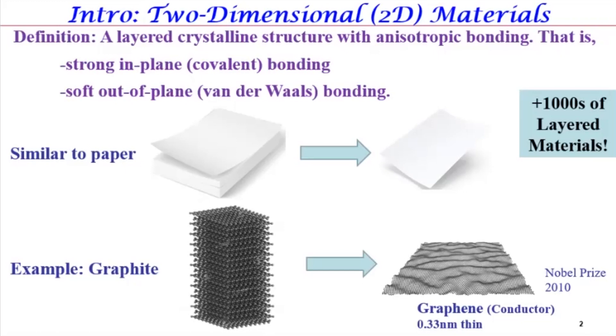The physics behind graphene led to the Nobel Prize in 2010. Today, there are thousands of these layered materials with different functions — from piezoelectric, semiconductor, topological materials, semimetals, sensor materials, to energy materials. For virtually any application you can imagine, some member of this family has the properties to address those functions.